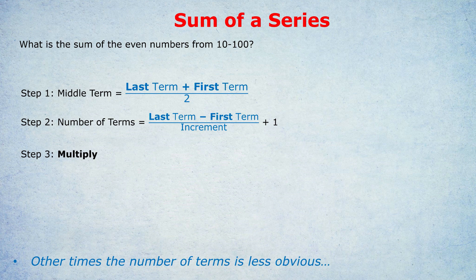Anyway, the middle term is the first thing we're going to find out by doing last term plus first term divided by 2. Notice it's always divided by 2. Doesn't matter if we're dealing with evens or integers, whatever, it's always divided by 2. So the last term is 100. The first term is 10. 100 plus 10 divided by 2 is 55. So the middle term is 55.